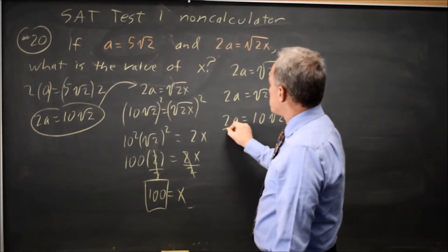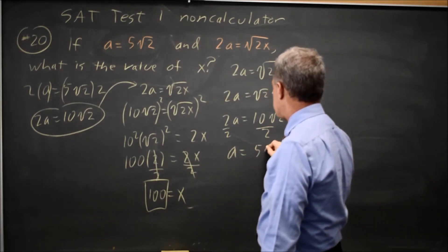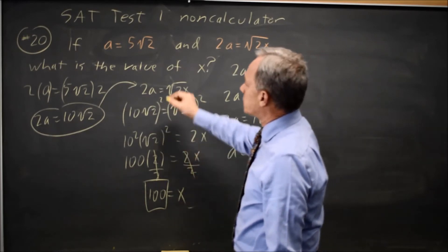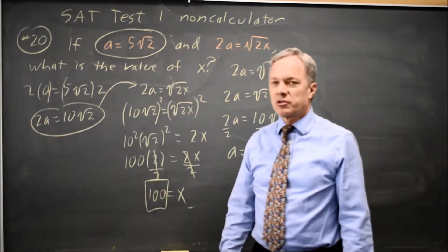If I divide both sides by 2, I get A by itself. 10 over 2 is 5. So A equals 5 root 2, which is an expression they gave us to start. And that would confirm that I do have the correct answer.